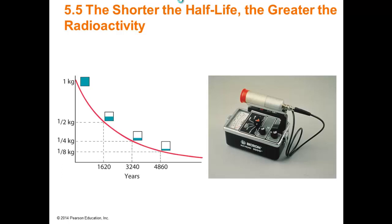Now let's talk about the effects of radiation. What you see here is a Geiger counter — we can actually measure radioactivity. The shorter the half-life, the greater the radioactivity. Half-life is the amount of time it takes for a sample to decompose to half of its current amount. If it takes 1,620 years to lose half its mass versus one minute, it's far more reactive if it takes only one minute, because that means it's releasing all that energy super fast.